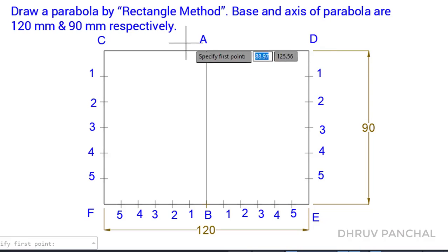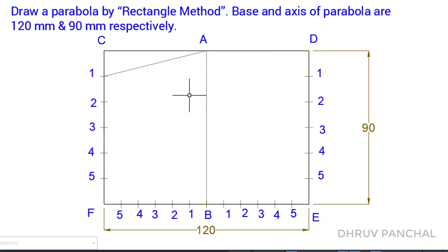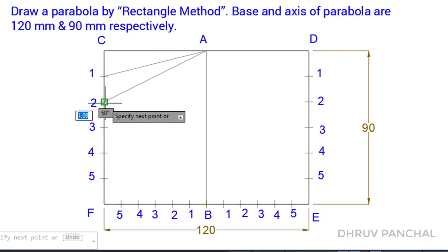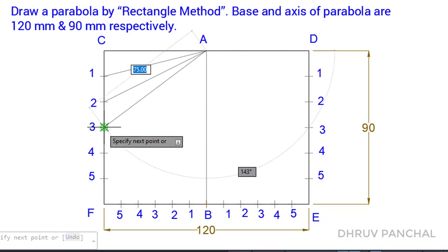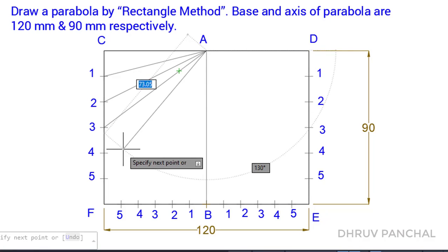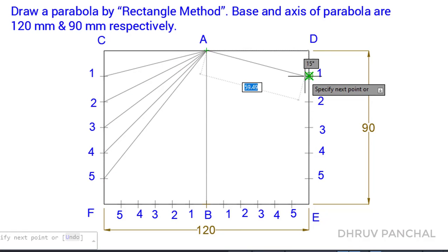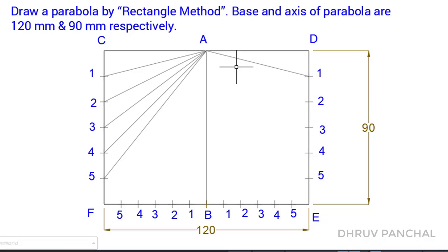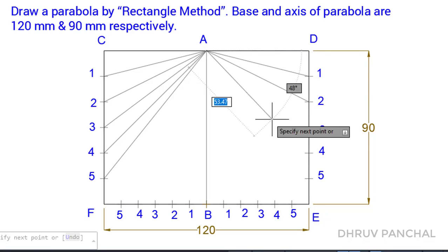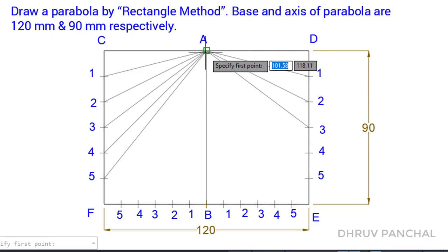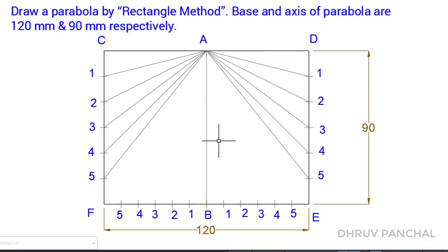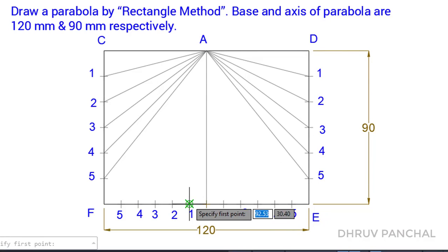From the end point of the axis, from point A, draw lines A1, A2, A3, A4, and A5. Do the same on the right-hand side — draw lines A1, A2, A3, A4, and A5.